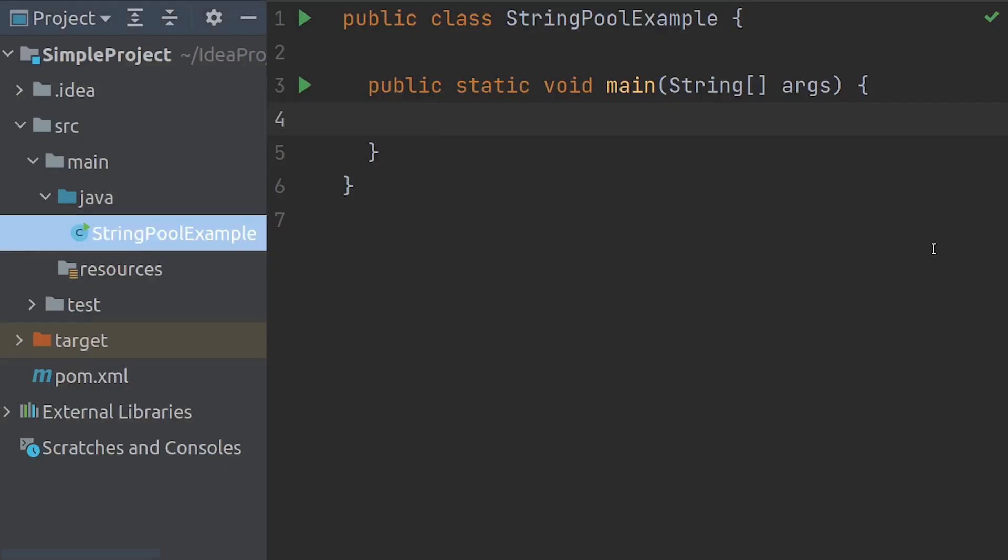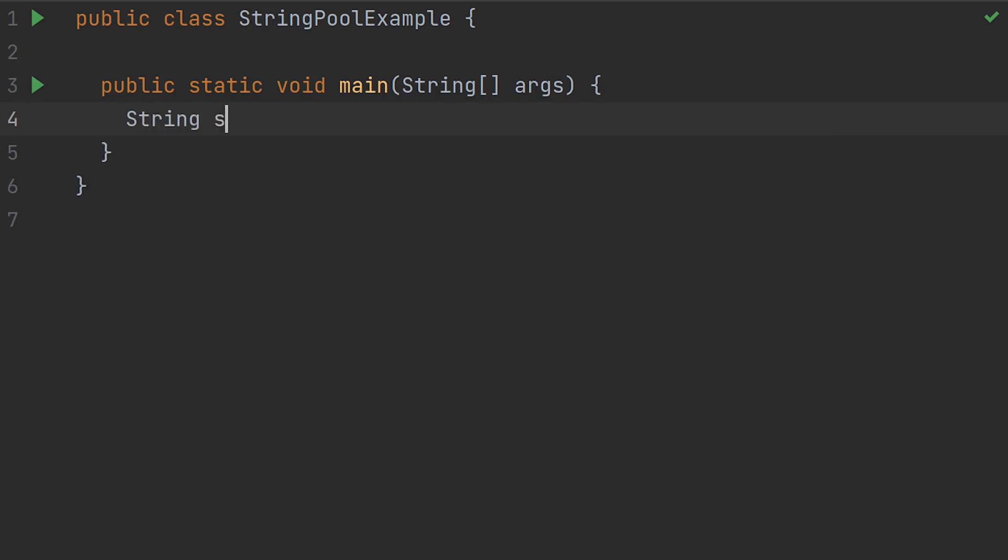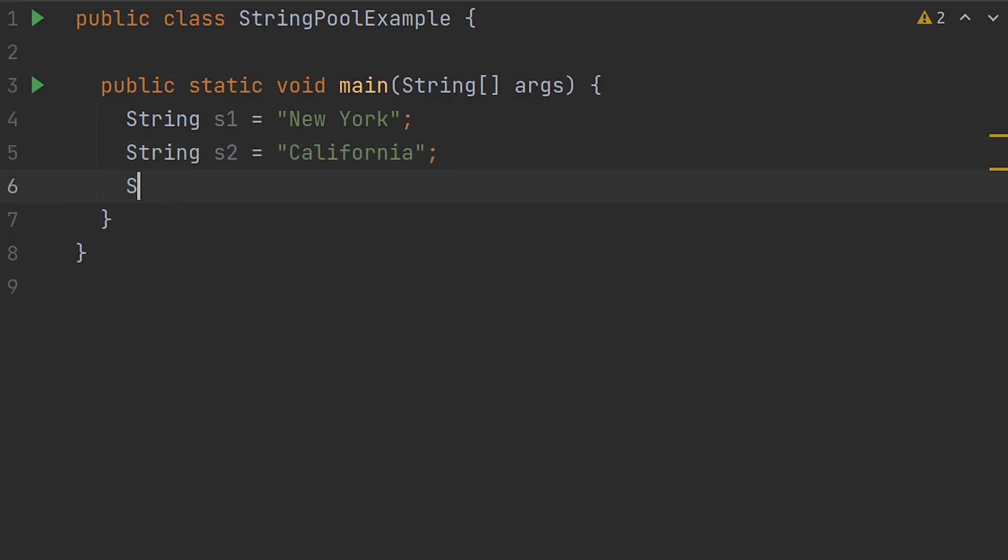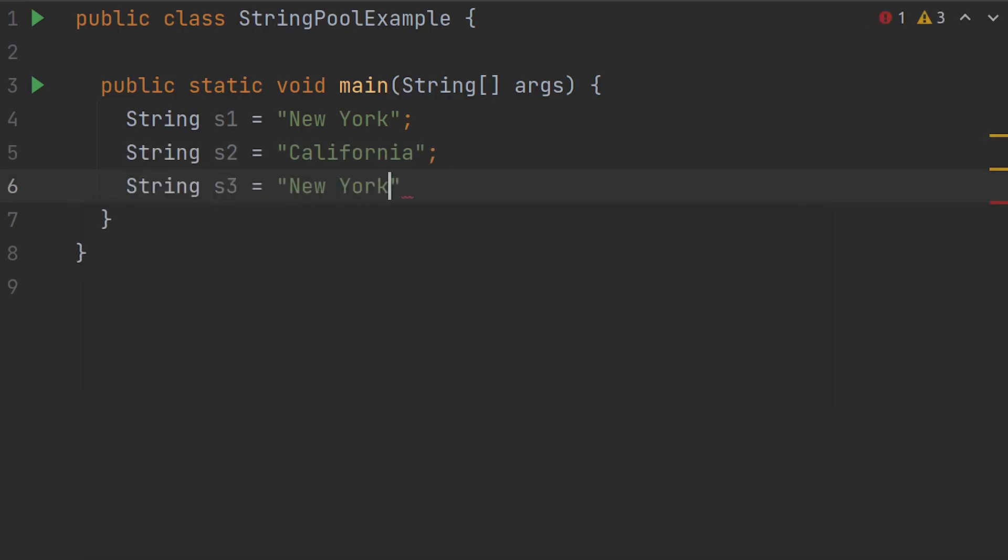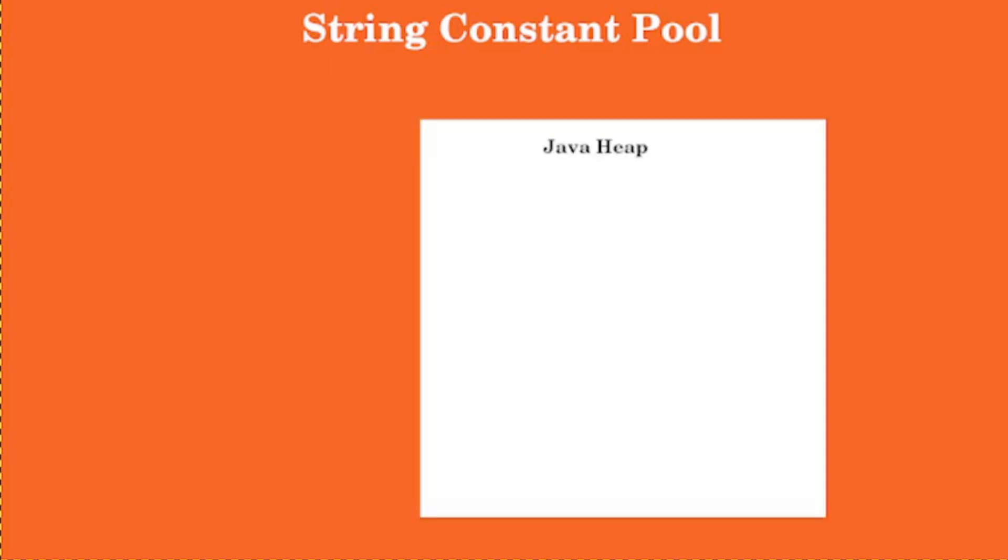Before we discuss further, let's see a few examples. Say string s1 equals New York, string s2 equals California, and string s3 equals New York. Let's draw the JVM heap. Now let's create a string pool inside the heap space.